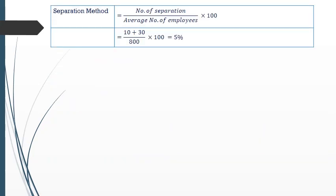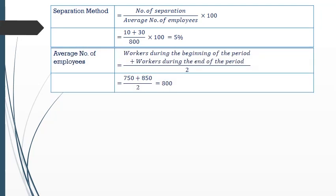Using the separation method: the number of separations is 10 workers who left plus 30 workers who were discharged, giving 40. The average number of employees is (750 + 850) / 2 = 800. So the separation rate is 40 / 800 × 100 = 5 percent.